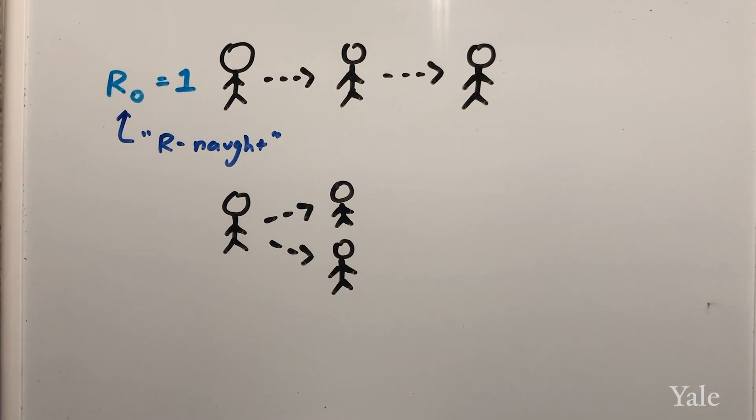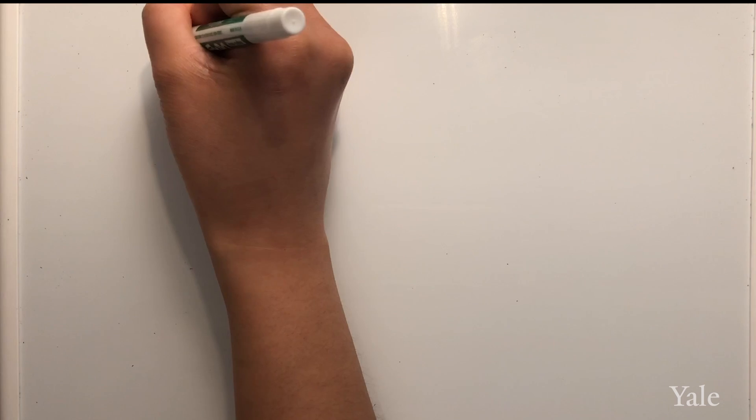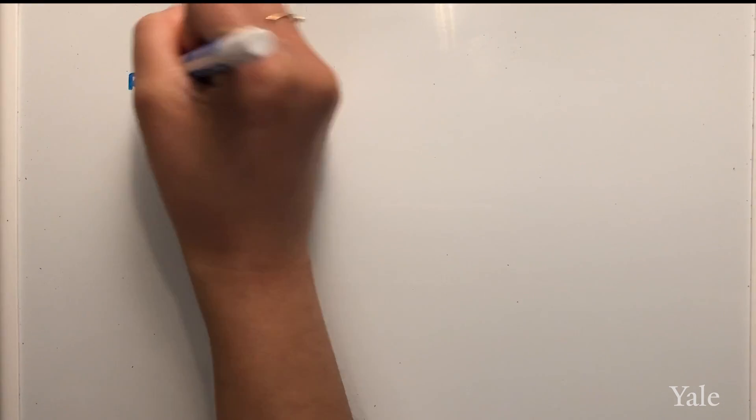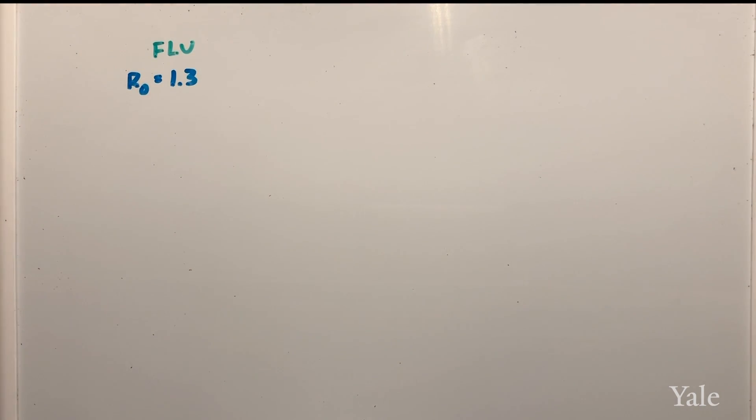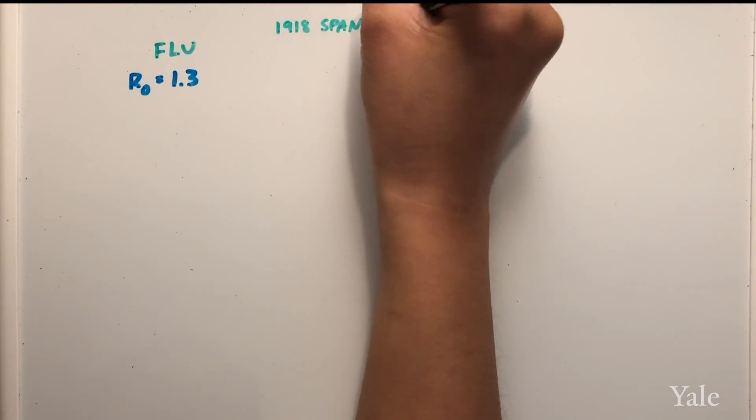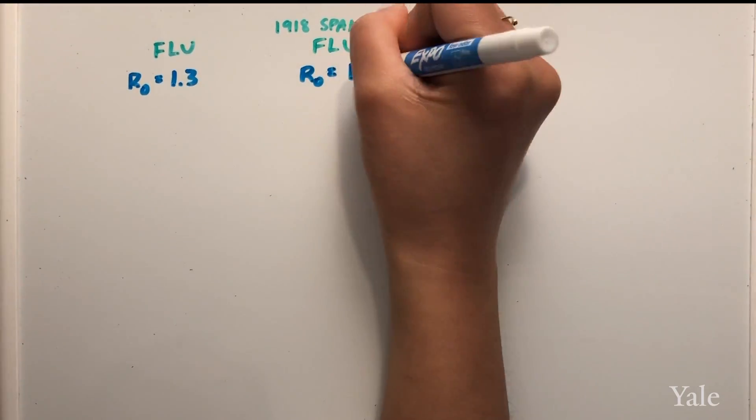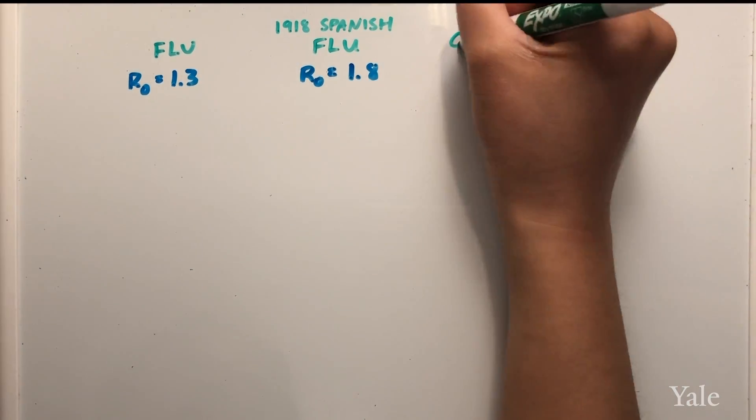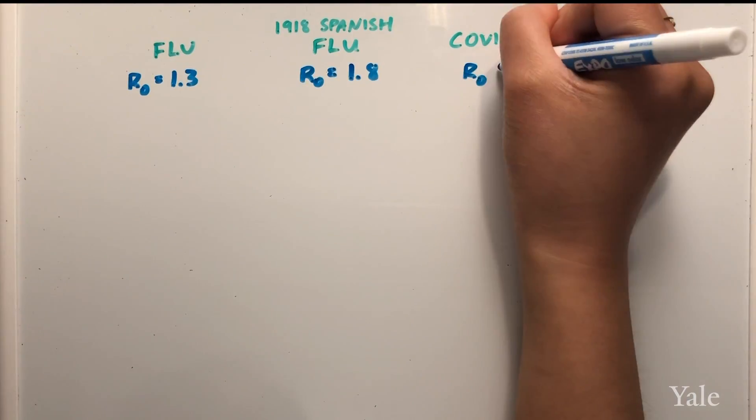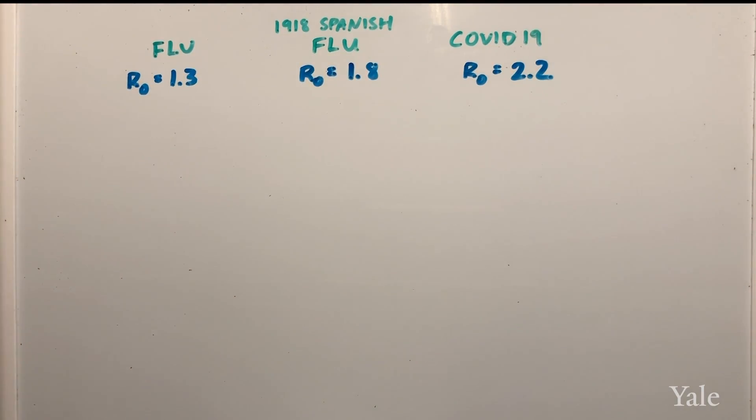If an R0 is over two, that means every one infection can cause two more infections. So why is COVID-19 such a big deal? For comparison, the average R0 of the seasonal flu is around 1.3. The R0 of the devastating 1918 Spanish flu was 1.8. The R0 of COVID-19 is estimated to be 2.2.